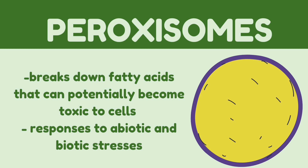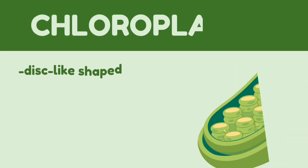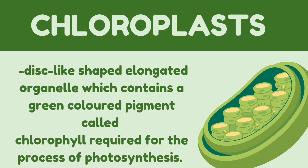Which organelle is responsible for photosynthesis? First, let us recall what photosynthesis is. Photosynthesis is the process by which plants use sunlight to create oxygen and energy necessary to fuel their activity. If your answer is chloroplast, then you are correct. Chloroplasts absorb energy from sunlight and use it to produce sugar for the plant to live and grow. The chloroplast is a disc-like, elongated organelle which contains a green-colored pigment called chlorophyll, required for the process of photosynthesis.